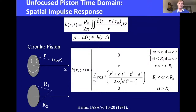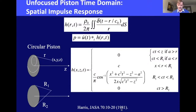Going off-axis, the solution must be split into cases depending on whether integration circles are complete or not. The pressure can be written as a convolution between particle velocity and the spatial impulse response — the field produced by a delta-function source. A paper by Harris from the 1980s provides the analytical expression for this impulse response for a circular transducer.